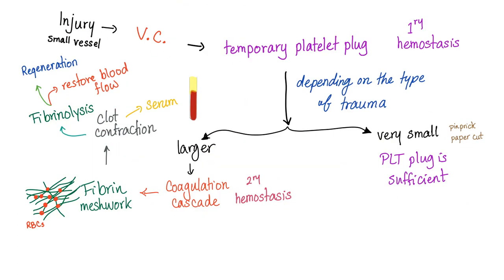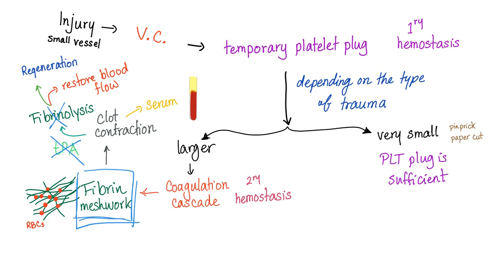Here's the whole story: you injure yourself, vasoconstriction, platelet plug — primary hemostasis — then secondary hemostasis, the coagulation cascade. The fibrin meshwork forms, traps the red blood cells, clot contracts. TPA causes fibrinolysis. But with today's medication, TPA is history — fibrinolysis is not going to happen. We are going to preserve this fibrin meshwork.